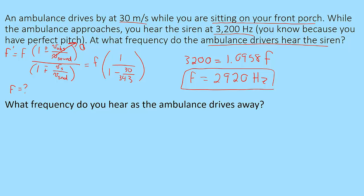Second part of this question, what frequency do you hear as the ambulance drives away? This time you are looking for the f prime. You're still sitting still so the numerator is still 1. The denominator now becomes a plus rather than a minus because it's moving away from you. So it's 1 over 1 plus 30 over 343 times your original frequency of 2920. Plug that in and the frequency that you hear as the ambulance drives away is 2685 hertz.